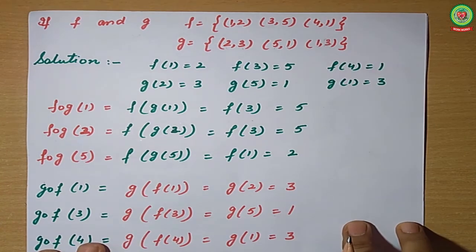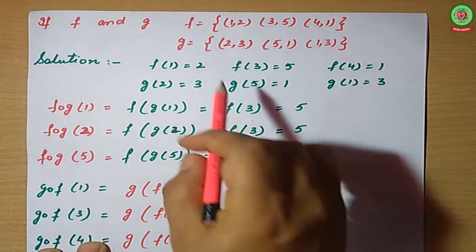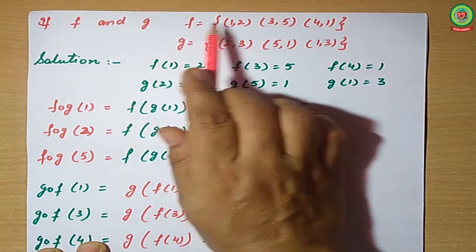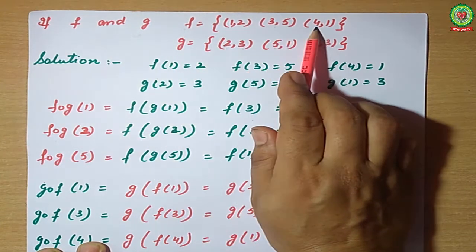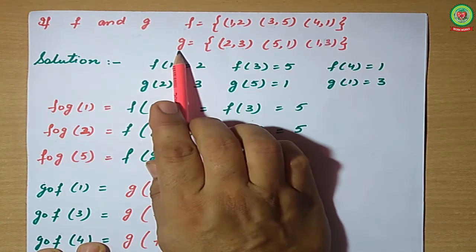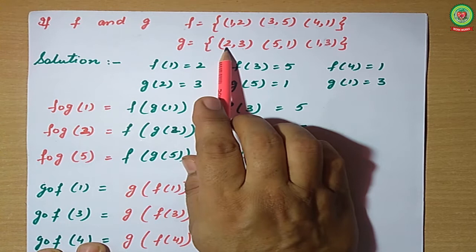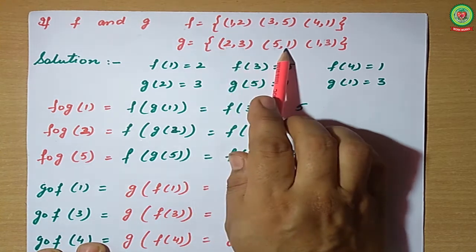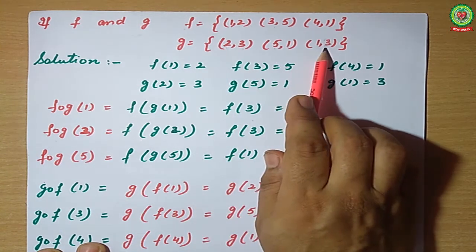Two functions in the form of sets are given. f is equal to {(1,2), (3,5), (4,1)} and the second function g is {(2,3), (5,1), (1,3)}.